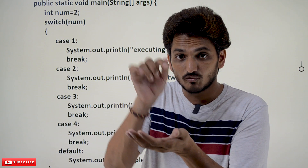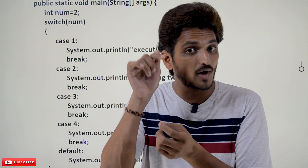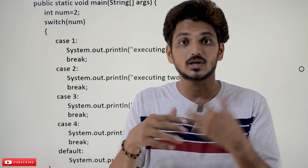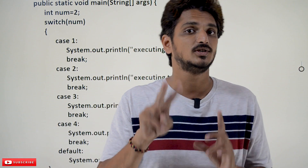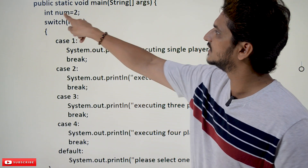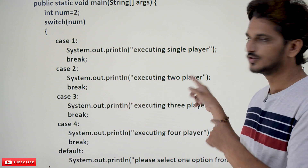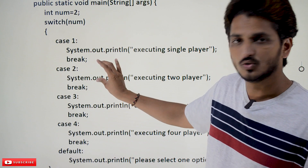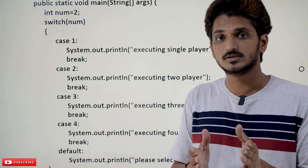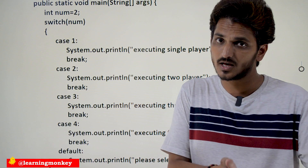If you click on one, single player game is executed. You are providing the input — one, two, three, four — whatever option they have provided. If you provide option two, two-player logic has to be executed. So the input you provided is num equal to two, it goes to case two and executes 'executing two player' — whatever logic you mentioned to execute the two-player game is going to run. Single player logic is different from two player logic, and two player logic is different from three player logic.